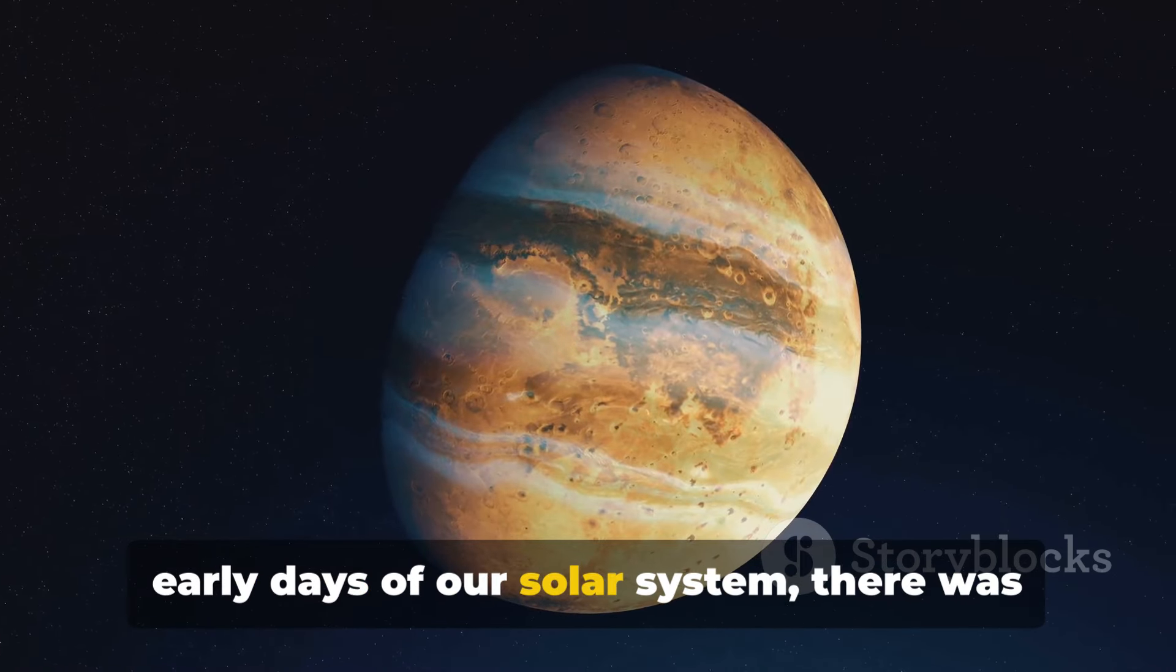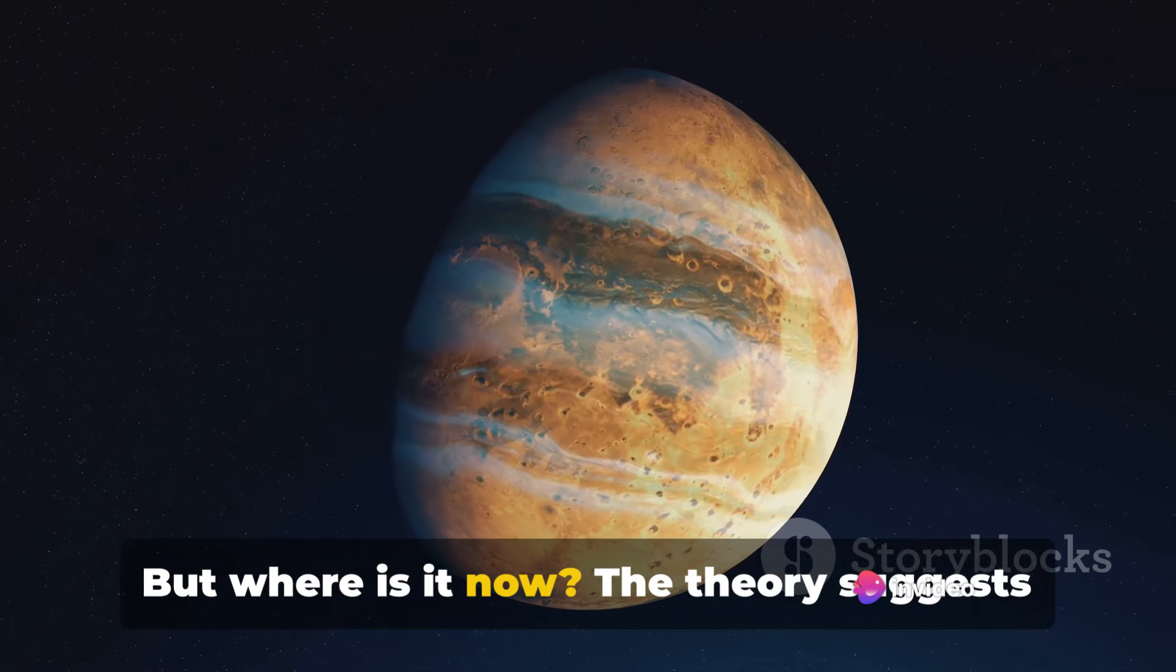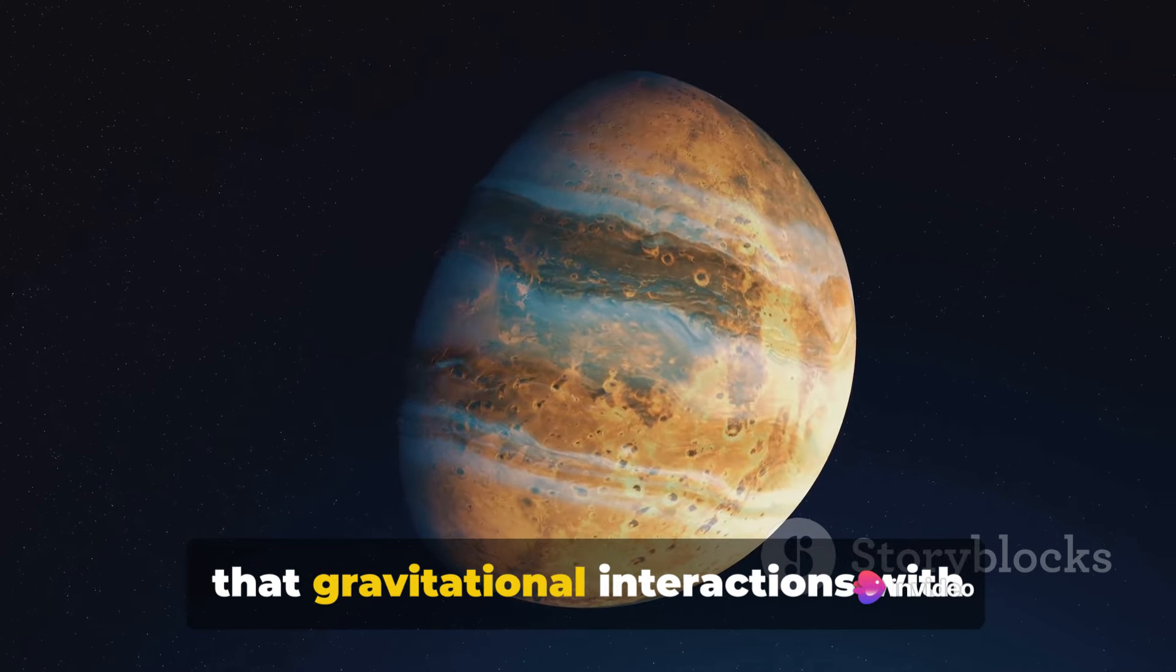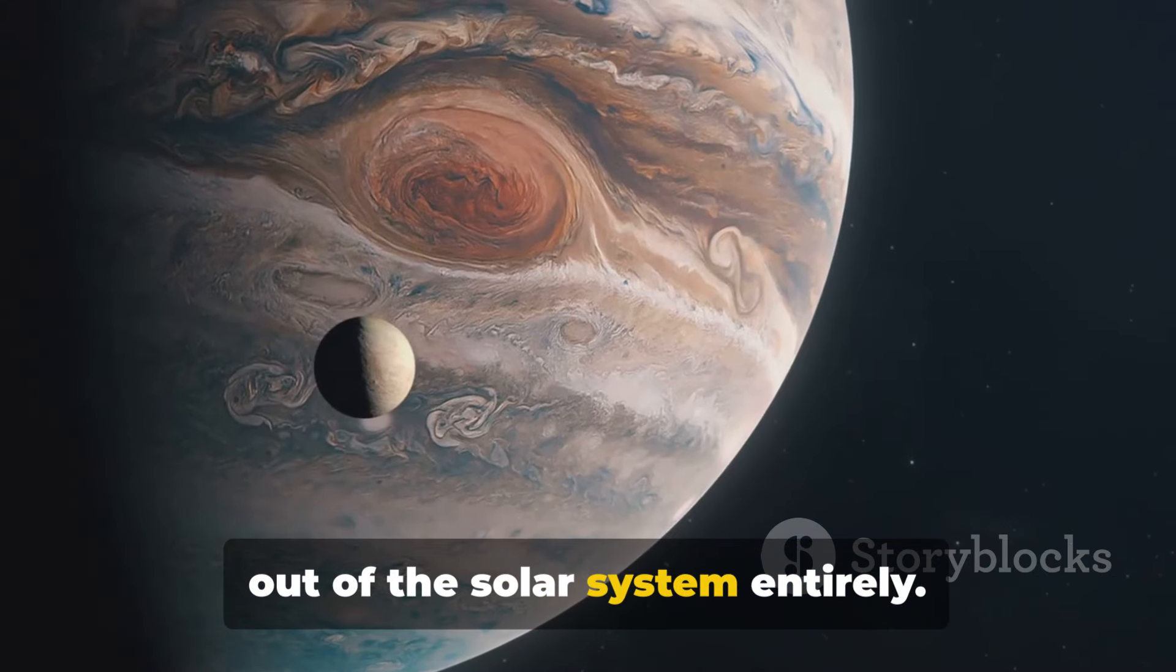...in the early days of our solar system, there was a fifth gas giant. But where is it now? The theory suggests that gravitational interactions with Jupiter could have catapulted this planet out of the solar system entirely.